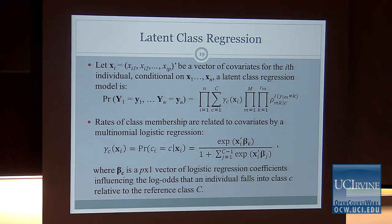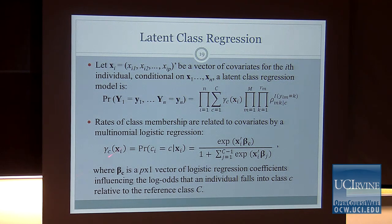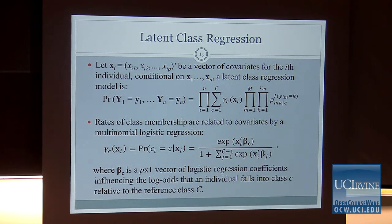Latent class analysis can be extended to incorporate covariate effects — called latent class regression. Covariates enter through the class membership probability function, so gamma_c becomes a function of covariates X_i. The relationship between class membership and covariates is written using multinomial logistic regression: the probability of C_i = c given predictors X_i is linked through a logistic function. This is similar to traditional multinomial logistic regression, except that the class membership is not directly observed — it is latent.